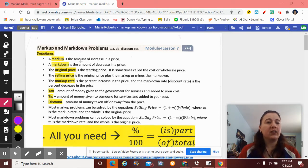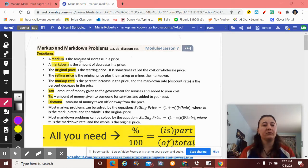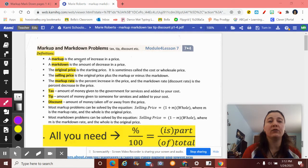Tip, it's not just good advice. It's the money you give somebody for their services, like when you go to a restaurant or you get your hair cut or you take an Uber. A discount is like a coupon. It's money taken off and away.